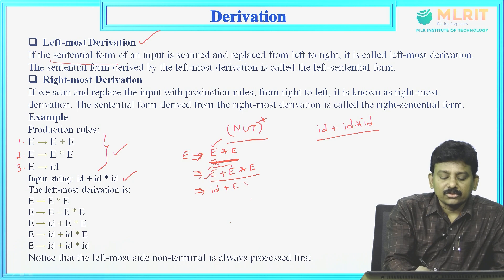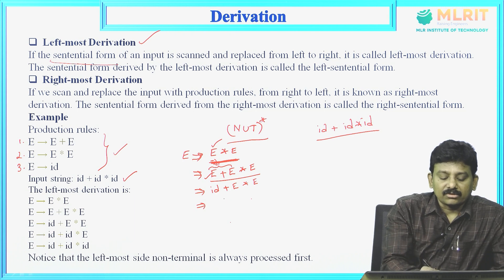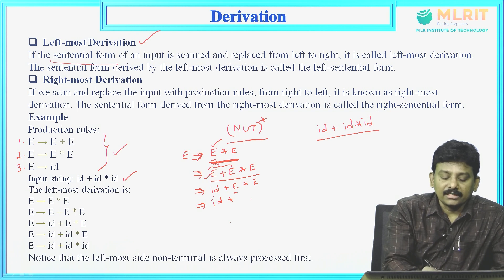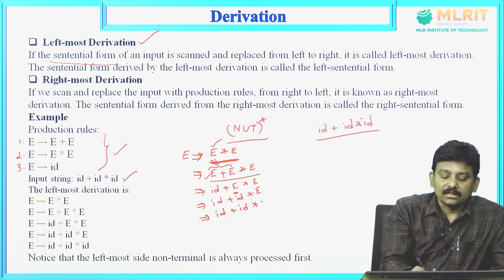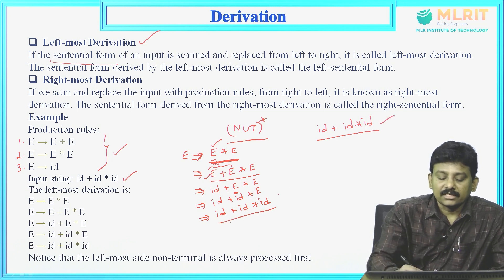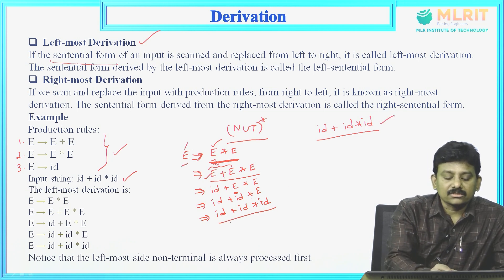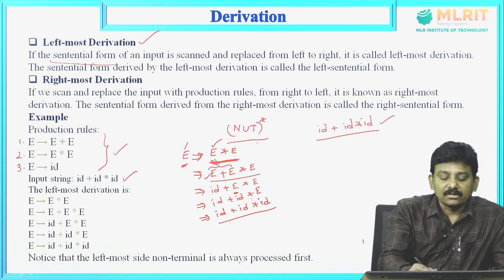In each and every step, you need to replace only one non-terminal; you should not replace more than one non-terminal in the derivation. id plus — this is the leftmost non-terminal: id is a terminal symbol, plus is a terminal symbol, E is the non-terminal, star is a terminal, E is a non-terminal, but the leftmost non-terminal is this E. So we need to replace this E by id. In the next step: id plus id star id. This string is derived from the starting symbol E. Derivation always begins with the start symbol E. This is called leftmost derivation, LMD.